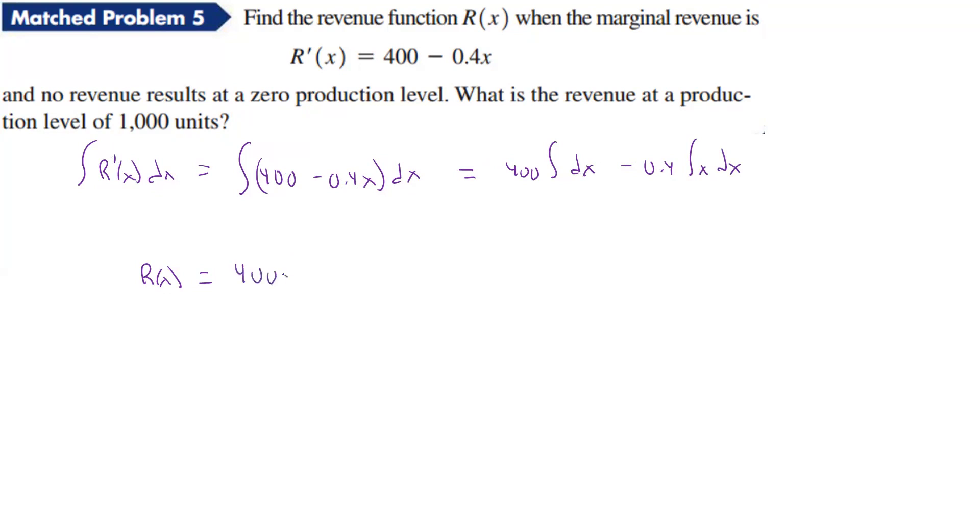So this gives us what? Well, that gives us 400x. This gives us x squared over 2 when we take that integral, so that's going to be a minus 0.2x squared, and we still have plus our c because we're going to have a plus c1 here, plus c2 here, combine them, and we get our c here.